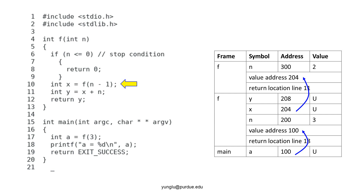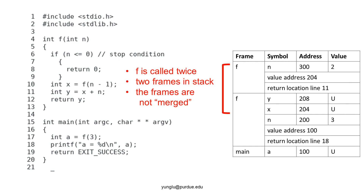Please remember that every local variable and argument has an address, and the addresses are always different. When f is called the first time by the main function, the argument n is 3. When f is called the second time, the argument is 3 minus 1 and it is 2. At this moment, f has been called twice — the first time by the main function and the second time by f. There are two frames in the stack memory. Some students asked whether the frames for recursive functions would be merged into only one frame. There is no such thing as merging frames in the stack memory. When a function is called, a frame is pushed to the top of the stack memory. This always happens without exception, regardless of whether a function is recursive or not.